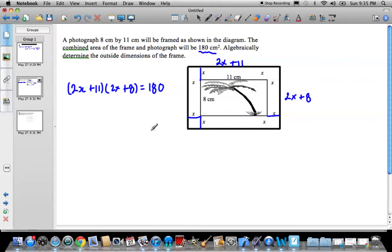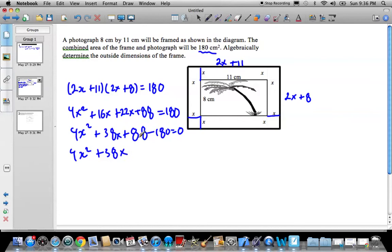So now I just need to do FOIL method here, or distribution, and find this guy. So it's going to be 4x squared plus 16x plus 22x. I'm just going to take that plus 88 is equal to 180. 4x squared, I'm just going to add these two together, so that's going to be plus 38x. So that's going to be 38, and then 88 minus 180 is equal to 0. So that's going to be 4x squared plus 38x minus 92 equals 0. This is my quadratic now, and I need to solve in order to find that width.